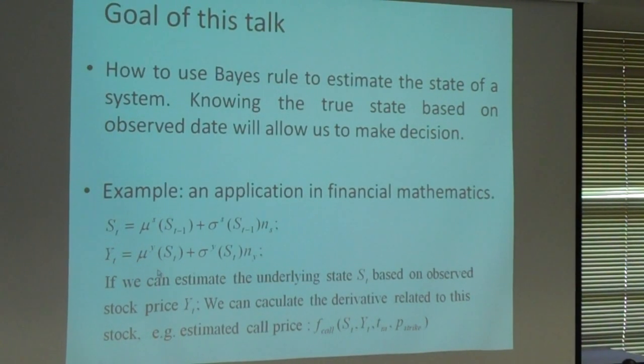So if we can estimate the st based on yt, if we can estimate the underlying state of the stock based on the stock price, we can estimate the call option price and the put option price. If this estimated call option price is different from the market call option price, then we can do some operation. If the estimated call option price is smaller than the market call option price, this means the call option is overpriced, so we need to sell it. And if it's underpriced, we need to buy it.